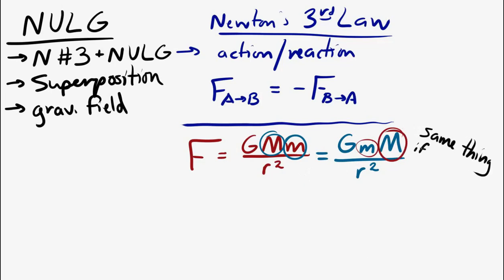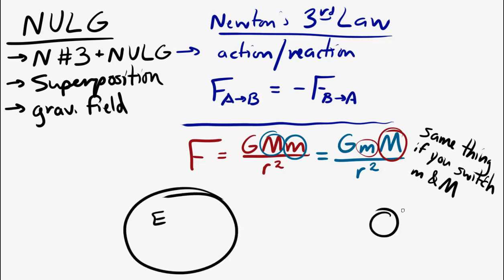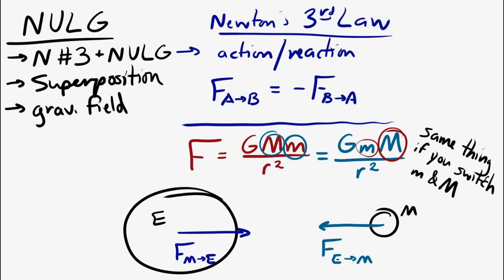So if you have the Earth and the Moon, one way to think about it is the force of the Earth on the Moon is equal and opposite to the force of the Moon on the Earth. If we draw that picture, you'll see that matches with what we know about Newton's universal law of gravitation — the force has to be attractive. So if the Moon is attracted to the Earth and the force is toward the Earth on the Moon, then both Newton's universal law of gravitation and the third law say that the same amount of force acts on the Earth, attracting it toward the Moon. They're equal and opposite forces.